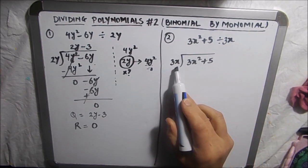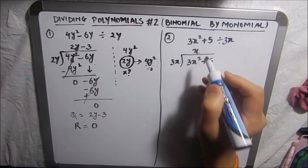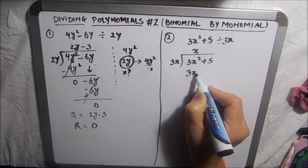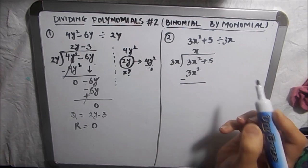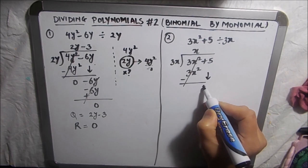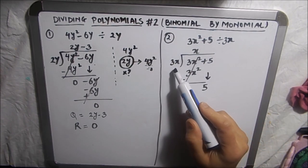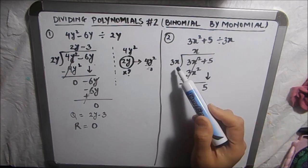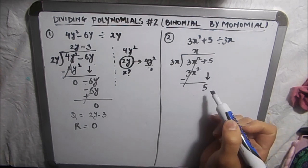Now this is very easy. To make 3x into 3x² we need to multiply it by x. So this will become 3x². Now signs get changed because we are subtracting the numbers. So this will get cancelled and then we will drop down the next number which is plus 5. Here we see that we cannot get 5 by multiplying 3x by any number, so we will stop it here.